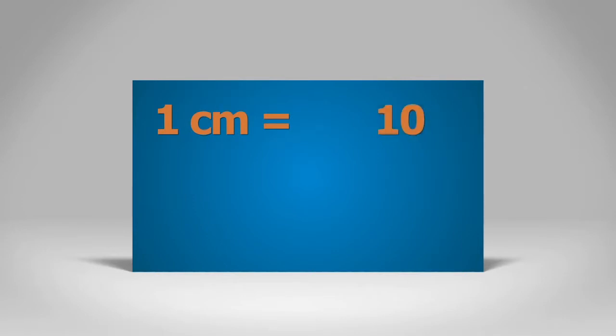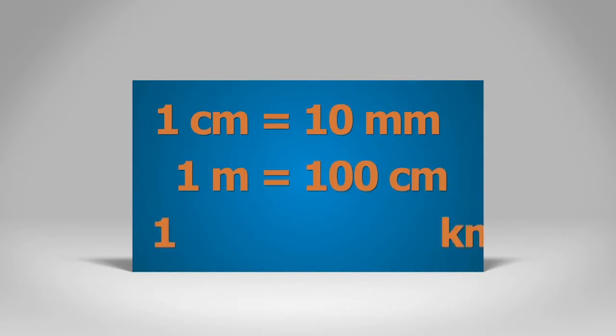One centimeter is the same length as 10 millimeters. One meter equals 100 centimeters. One kilometer equals 1,000 meters.